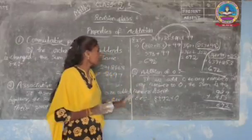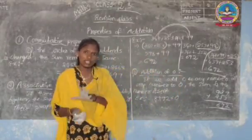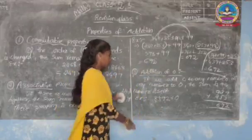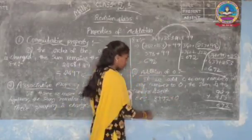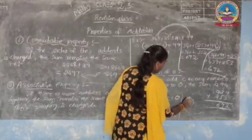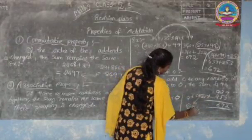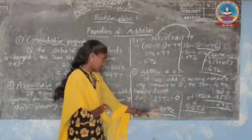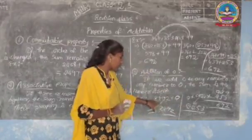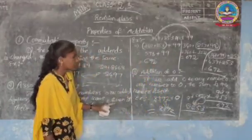The next one is addition of zero. If we add 0 to any number, or any number to 0, we get the sum as the number itself. For example, 8392 plus 0 equals 8392. And 0 plus 6253 equals 6253. So any number added to 0, or 0 added to any number, gives the number itself. This is the property of addition of zero.